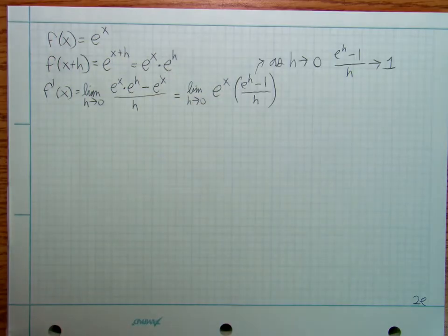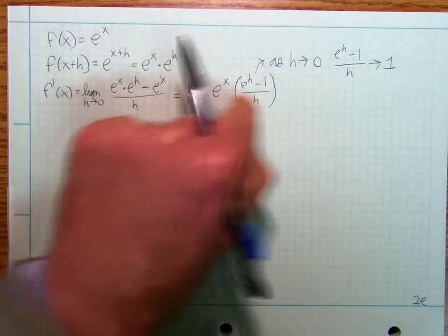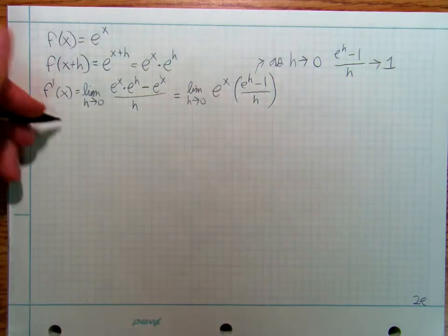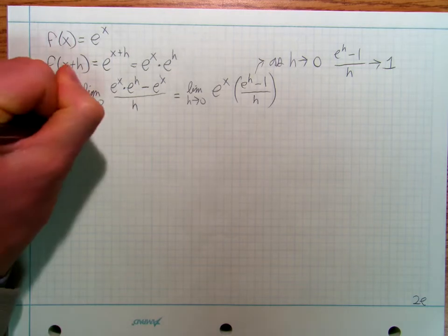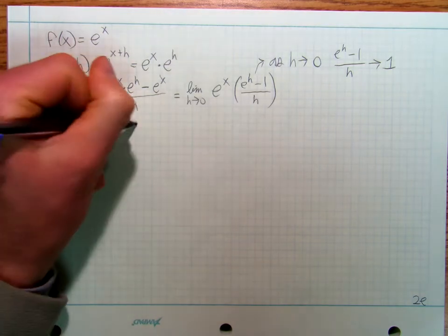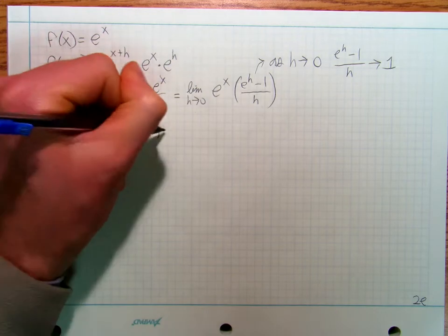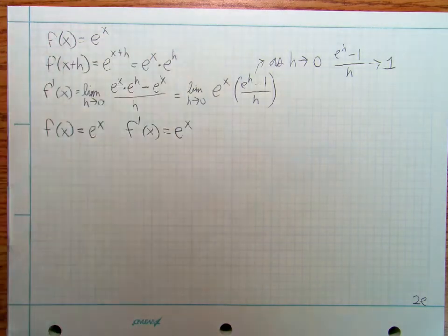I'm going to say that as h approaches zero, this thing here equals 1. So I'm going to say that when f(x) is equal to e^x, then f'(x) is also equal to e^x.